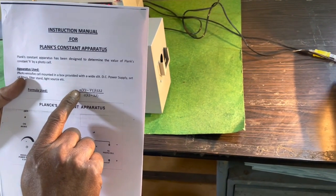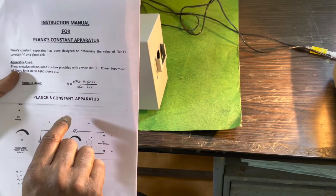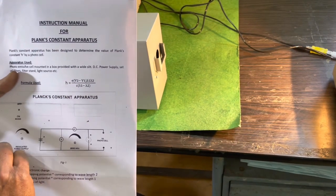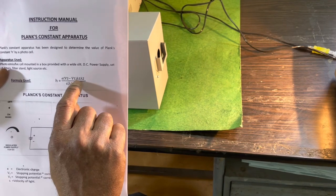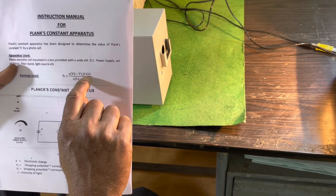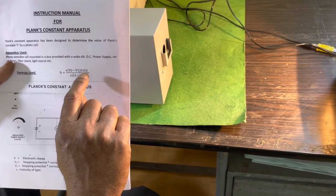e is the electronic charge which is given to you. c is the velocity of light which is already given to you. λ₁ is the wavelength of the blue color which is known to you. λ₂ is the wavelength of green color which is also known to you.